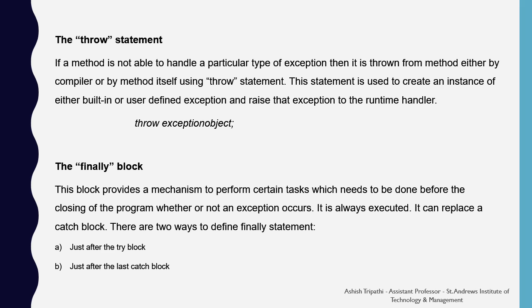The finally block provides a mechanism to perform certain tasks before the closing of the program, whether or not an exception occurs. It is always executed and can replace a catch block. It can be defined just after the try block or just after the last catch block. Since finally always executes whether there is an exception or not, it is ideal for releasing resources such as closing files or closing connections.